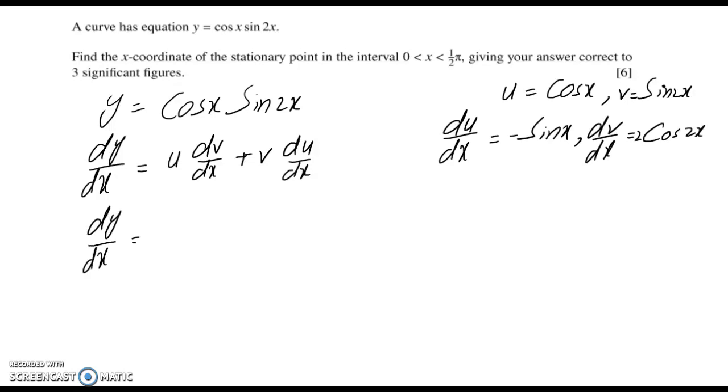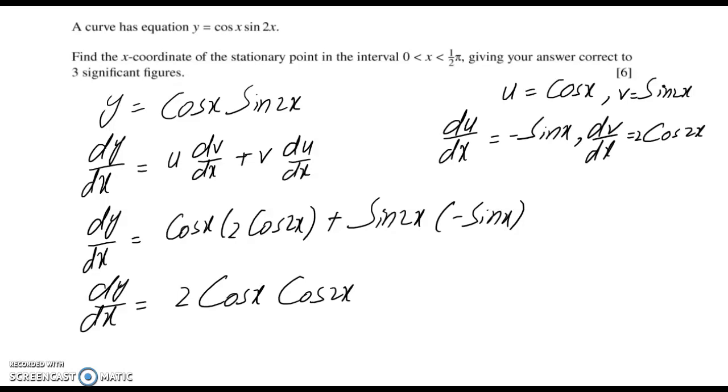Substituting the values into the formula: u as is times derivative of v which is 2 cos 2x, plus v as is which is sin 2x times derivative of u which is negative sin x. This can be written as 2 cos x cos 2x - sin x sin 2x.